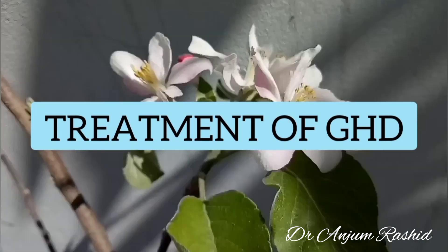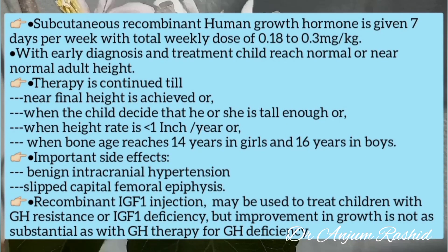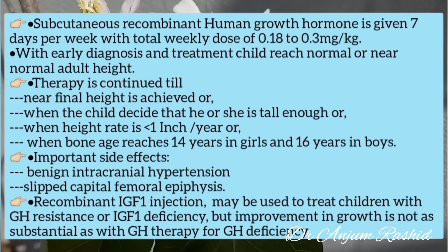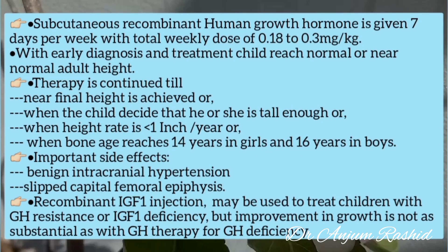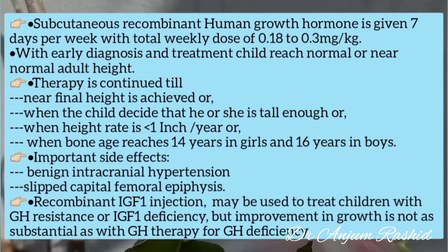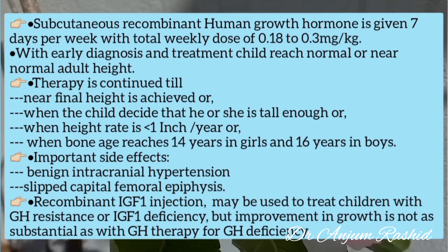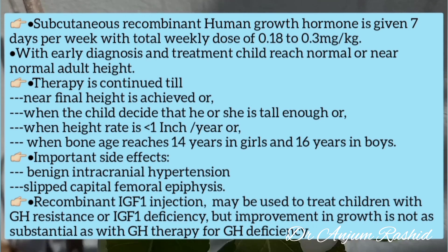The recommended treatment is subcutaneous recombinant human growth hormone, given seven days per week. The total weekly dose is 0.18 to 0.3 milligrams per kilogram. With early diagnosis and treatment, the child can reach normal or near-normal adult height.